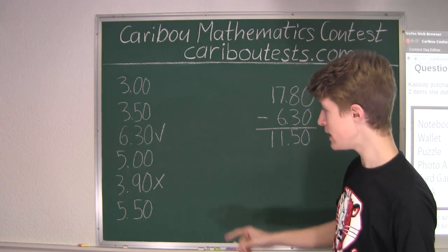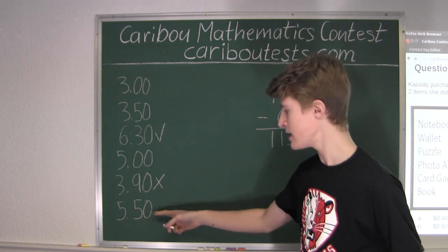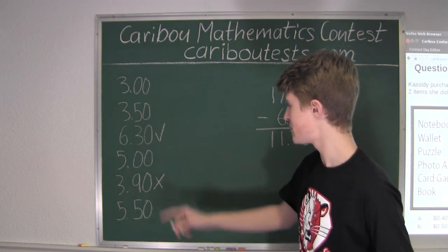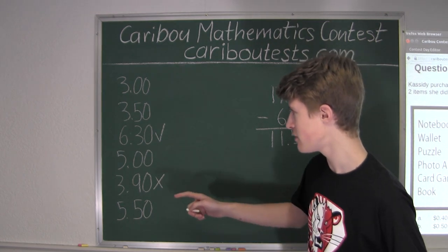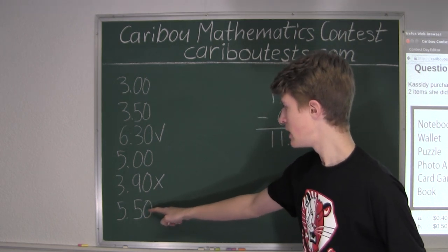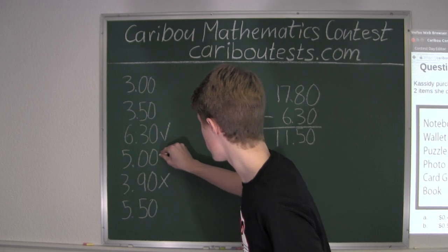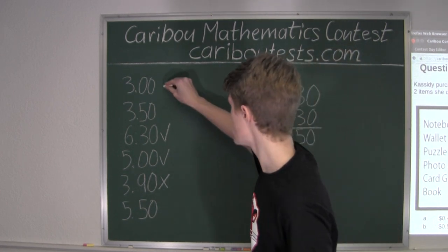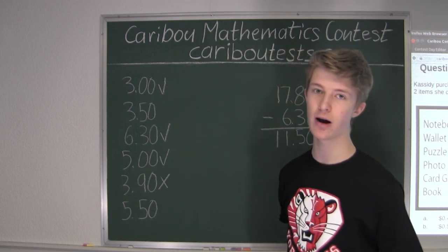So the other three items that she purchased must have come to a total of $11.50. Now, only two other options end in $0.50, which is $5.50 and the $3.50. So, therefore, she could only have purchased either the $3.50 one or the $5.50 one. And for that reason, she must have purchased the item for $5.00, and she also must have purchased the item for $3.00 since she purchased four items.